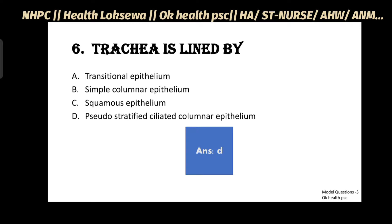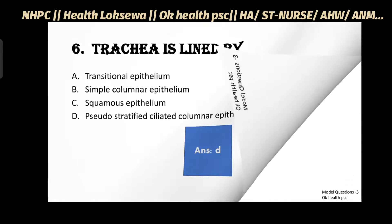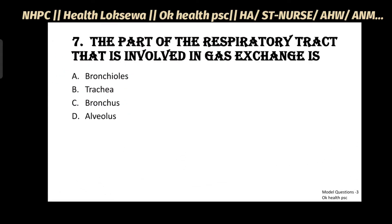Question No.6: Trachea is lined by - Transitional Epithelium, Simple Columnar Epithelium, Squamous Epithelium, Pseudo-Stratified Ciliated Columnar Epithelium. Answer: D - Pseudo-Stratified Ciliated Columnar Epithelium.